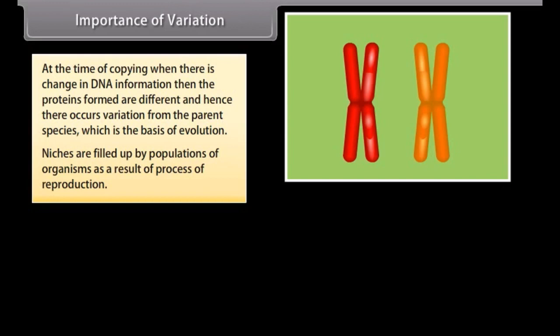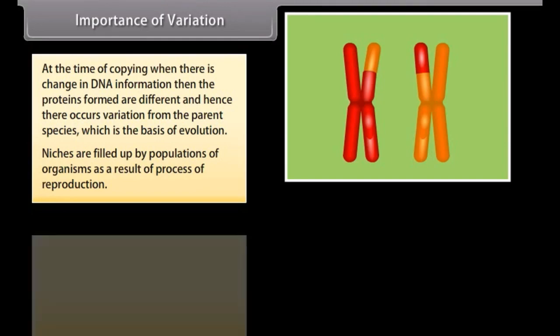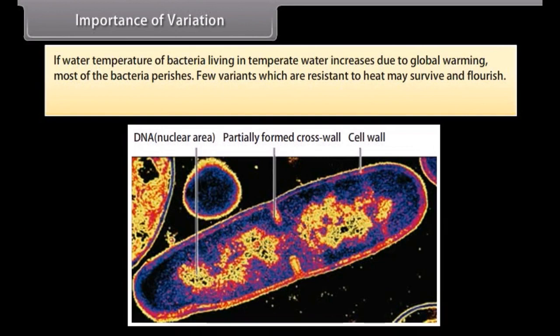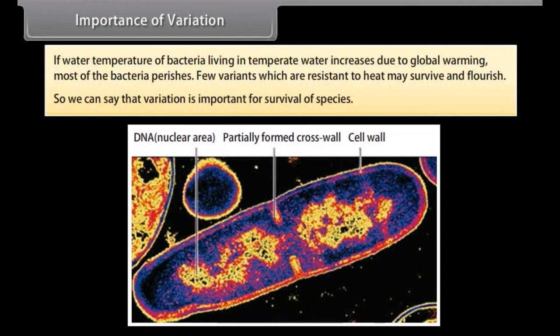Niches are filled up by populations of organisms as a result of the process of reproduction. Due to external factors like change in temperature, water level, meteoroid hits, etc., there is a drastic change in niche. As a result, the entire population may perish, but there are chances that few individuals may survive. For example, if the water temperature of bacteria living in temperate water increases due to global warming, most bacteria perish, but few variants resistant to heat may survive and flourish. So we can say that variation is important for the survival of species.